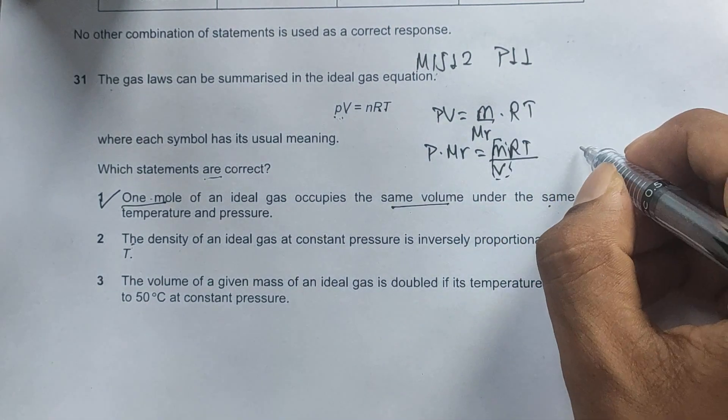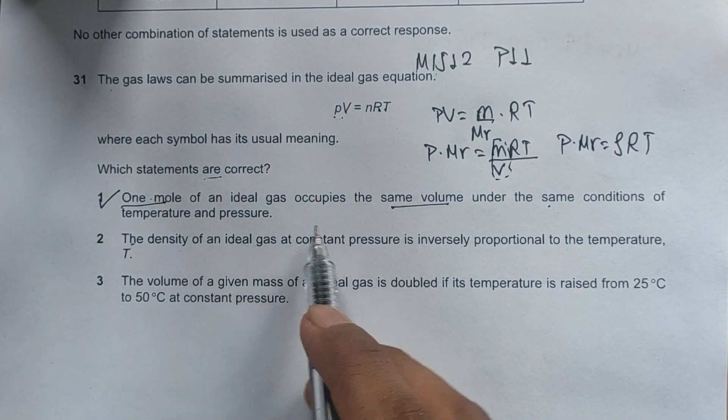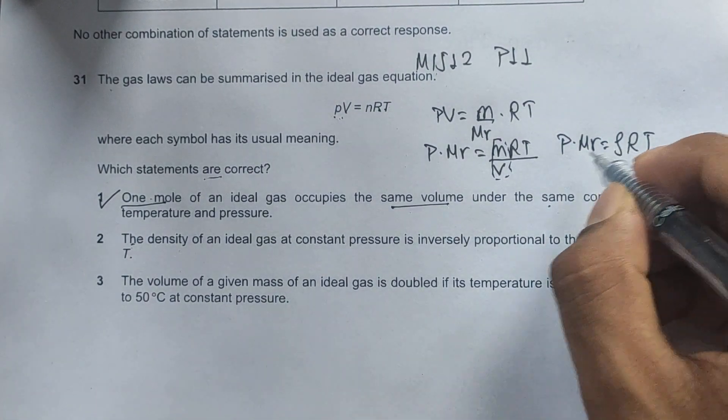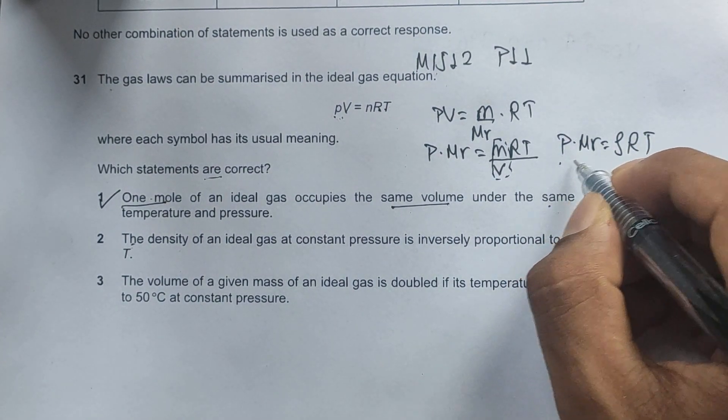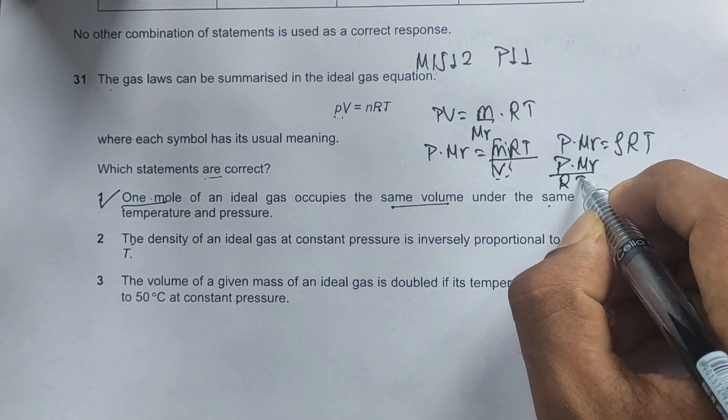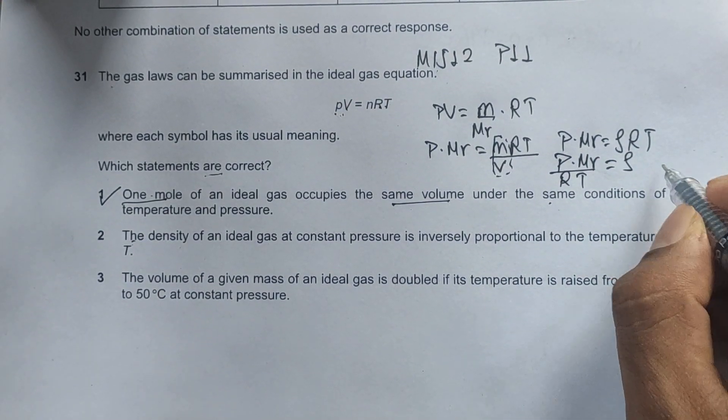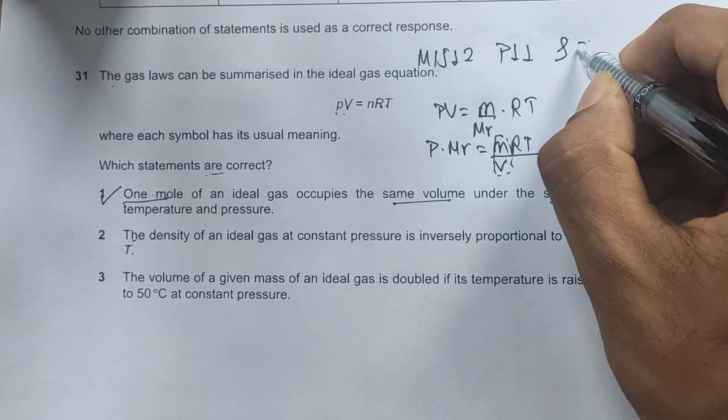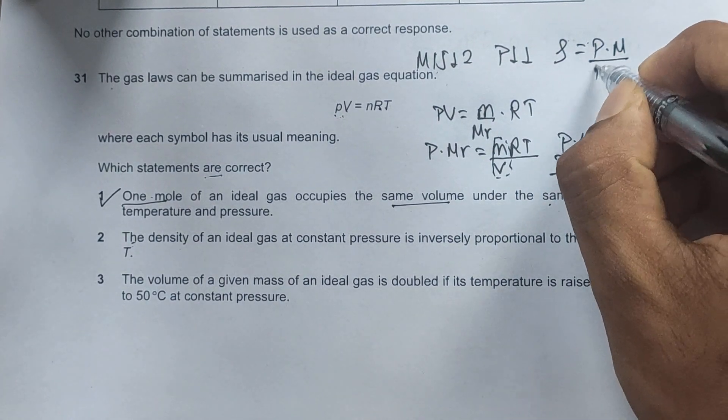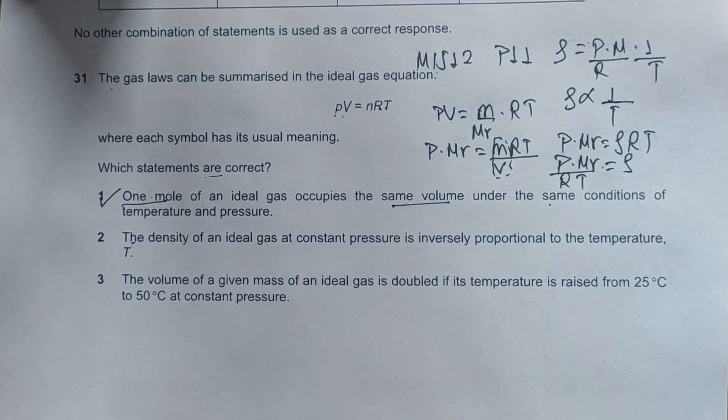This is the formula for density, so we'll have P times Mr equals rho RT. The question says density is inversely proportional to temperature. We can write rho equals P times Mr divided by R times 1 by T. This gives us the idea that rho is inversely proportional to the temperature. This makes option two the correct answer.